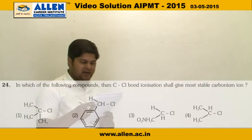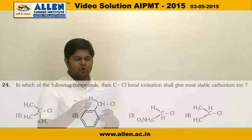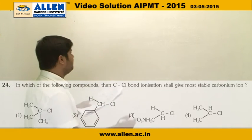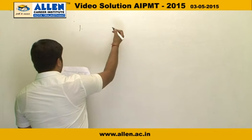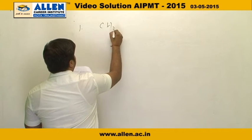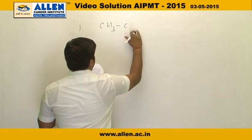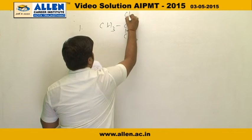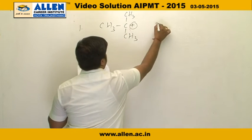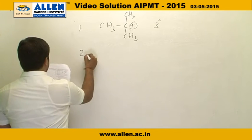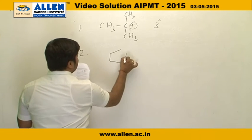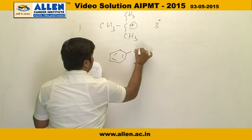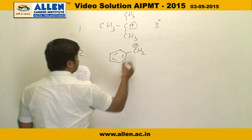Question number 24 asks: in which of the following compounds will C-Cl bond ionization give the more stable carbonium ion? First, we have to identify the most stable carbonium ion. The first carbonium ion formed will be a tertiary (3°) carbonium ion. The second carbonium ion will be a benzoyl carbonium ion, which is resonance stabilized.